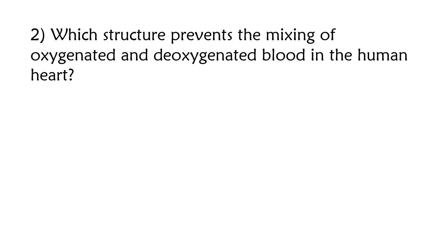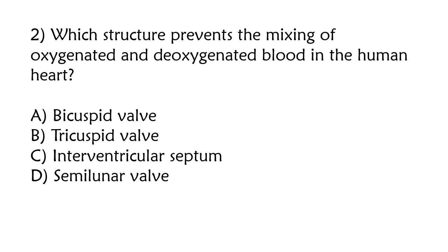Which structure prevents the mixing of oxygenated and deoxygenated blood in the human heart? Bicuspid valve, tricuspid valve, interventricular septum, semilunar valve. The correct answer is option C, interventricular septum.